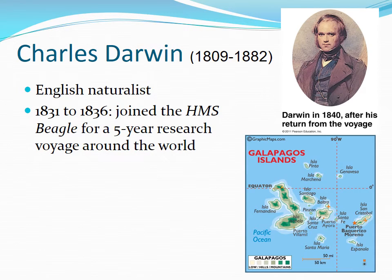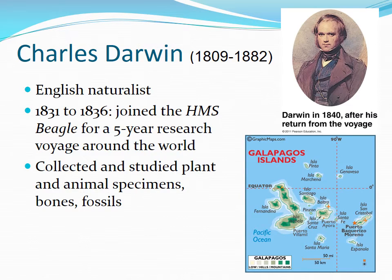We finally made it to the head honcho of evolution, Charles Darwin — an English naturalist who lived from 1809 to 1882. He traveled from 1831 to 1836 on the HMS Beagle, researching species around the world. He was only 22 years old when he began this five-year cruise, collecting and studying plant and animal species, bones, and fossils from every place he traveled.